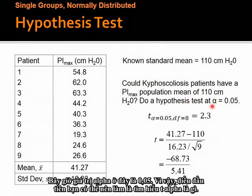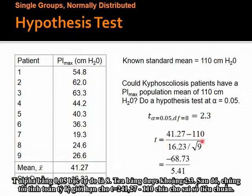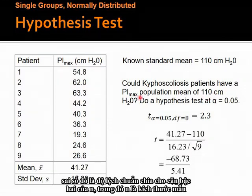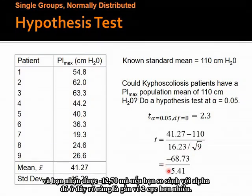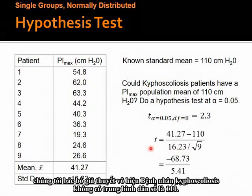We calculate the critical ratio T equals 41.27 minus 110 divided by the standard error (standard deviation divided by square root of n), and we get negative 12.70. Comparing to T-alpha of 2.3 (two-tailed: negative 2.3 or positive 2.3), this is obviously much more extreme — more negative than negative 2.3. The conclusion is: reject the null hypothesis. Kyphoscoliosis patients do not have a population mean of 110.